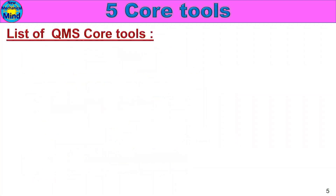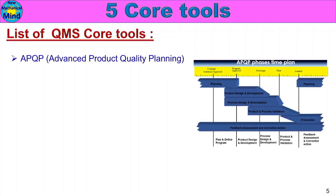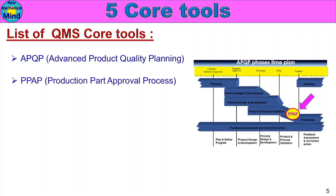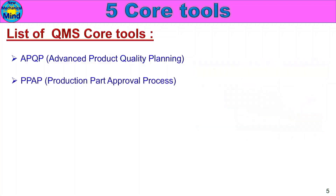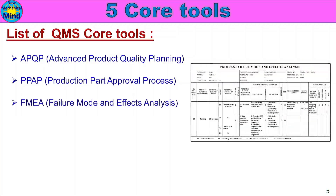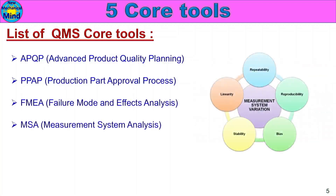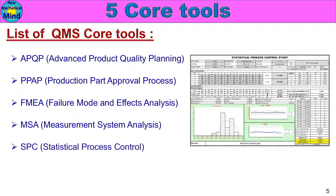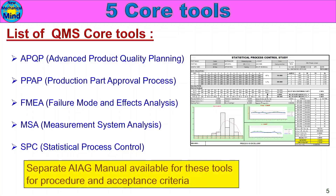The five QMS core tools are: APQP — Advanced Product Quality Planning; PPAP — Production Part Approval Process; FMEA — Failure Mode and Effects Analysis; MSA — Measurement System Analysis; and SPC — Statistical Process Control. A separate AIAG manual is available for each of these tools, covering procedure and acceptance criteria.